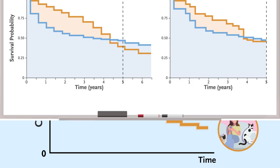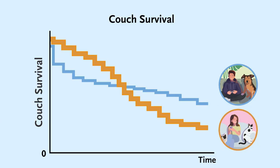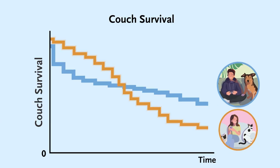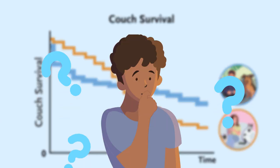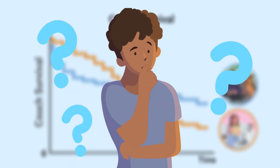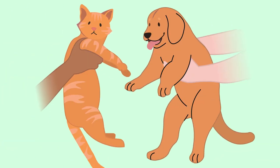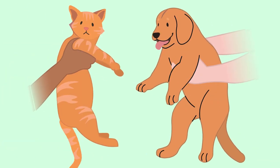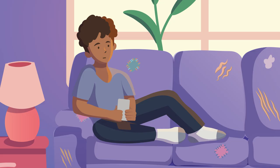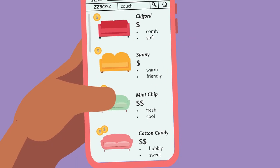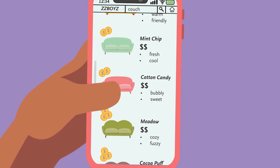So now you know, cat couches have a more limited lifespan than dog couches. What do you do with this information? You realize you're not trading in your kitten for a puppy — you'll just have to buy a couch that you're okay with replacing in a few years. And after searching online, you think you've found the perfect one.